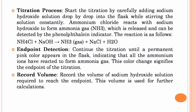Fifth, titration process: start the titration by carefully adding sodium hydroxide solution drop by drop into the flask while stirring the solution constantly. Ammonium chloride reacts with sodium hydroxide to form ammonia gas, NH3, which is released and can be detected by the phenolphthalein indicator. The reaction is: NH4Cl + NaOH → NH3(g) + NaCl + H2O.